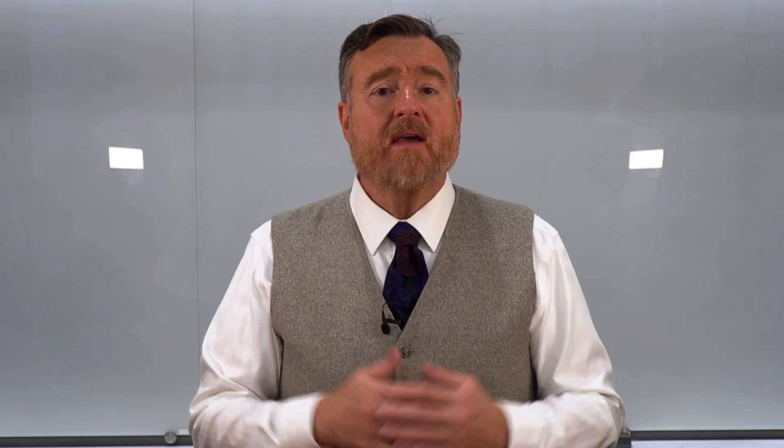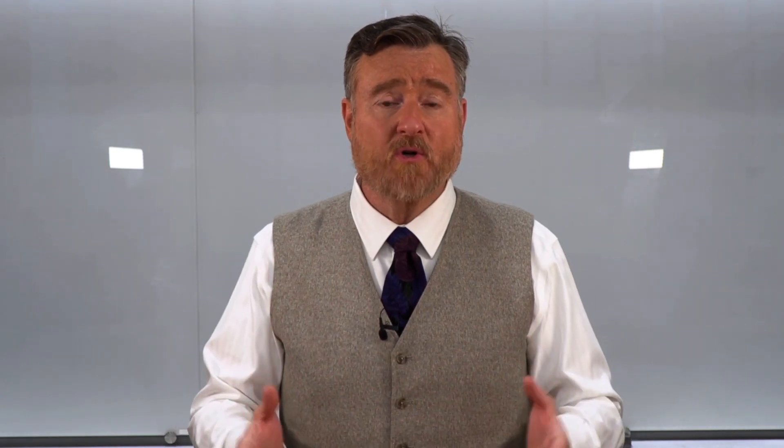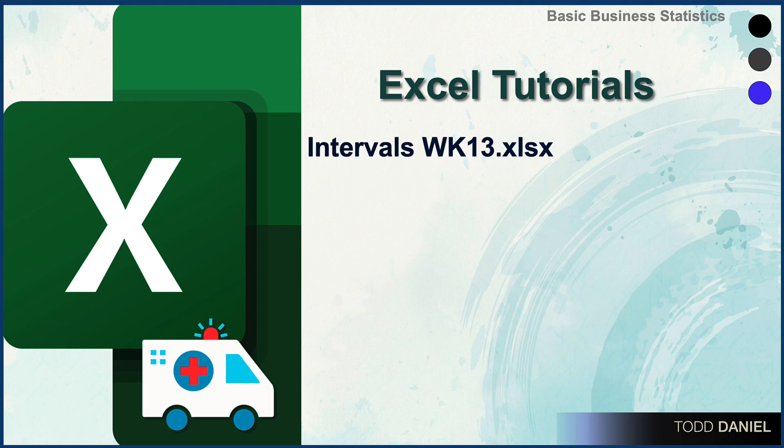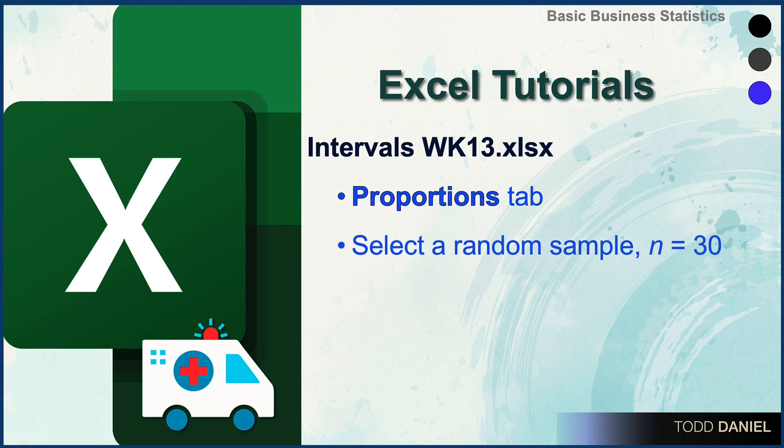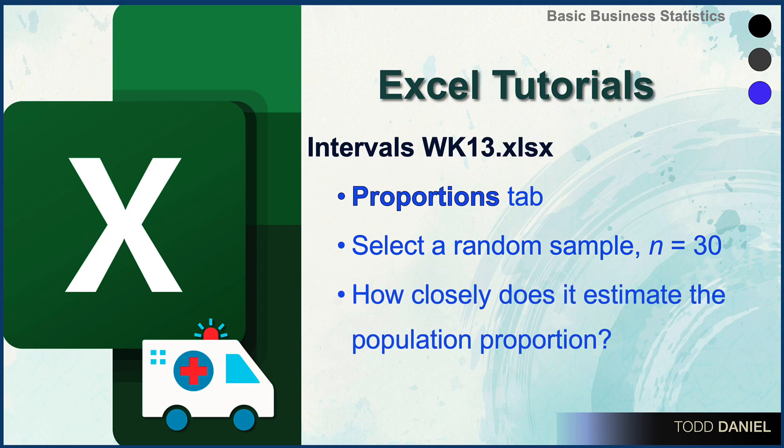And now we can calculate a confidence interval around our proportion by using an Excel spreadsheet. Go to the proportions tab for intervals week 13. We are going to select a random sample of size 30, and then determine how closely does our sample estimate the population proportion.